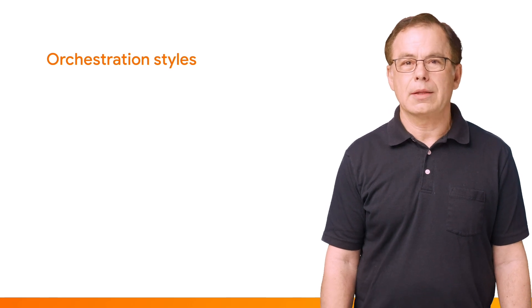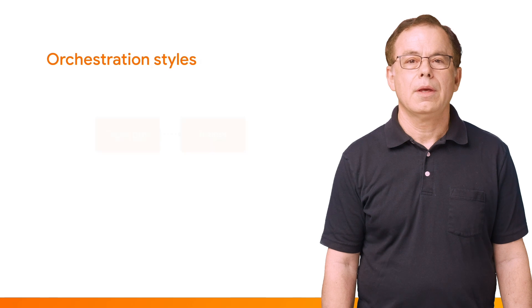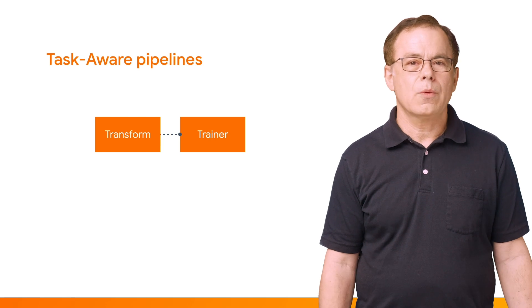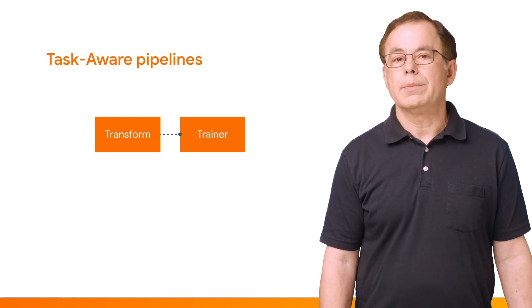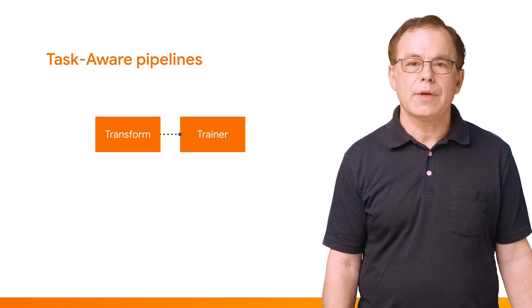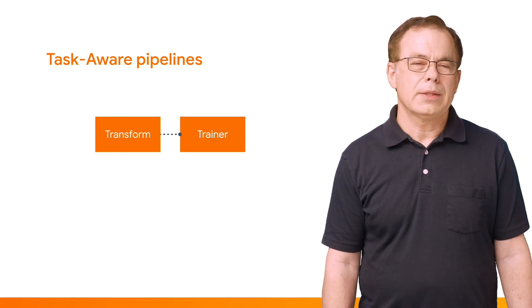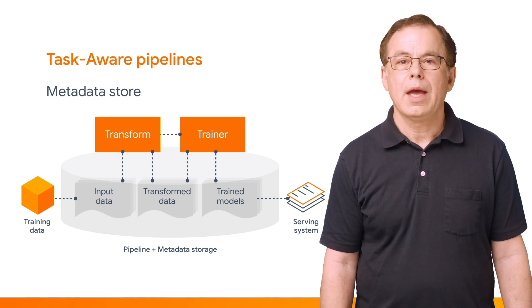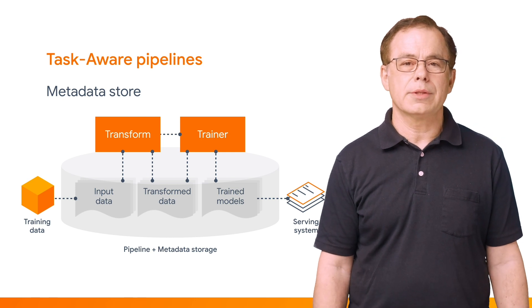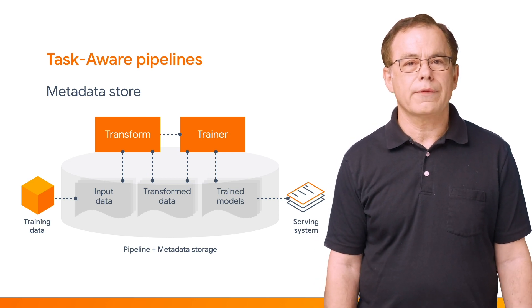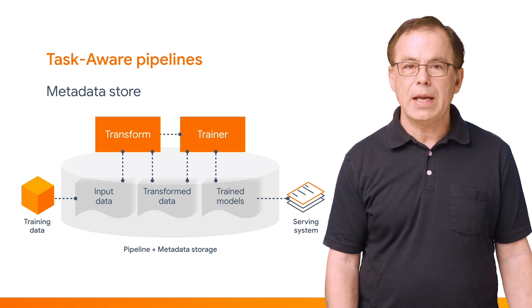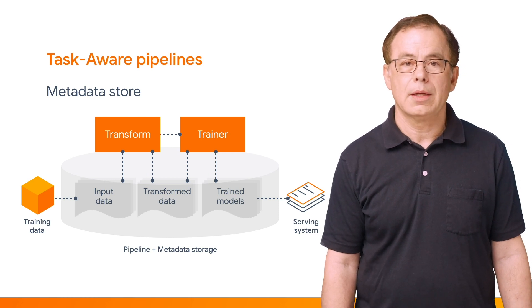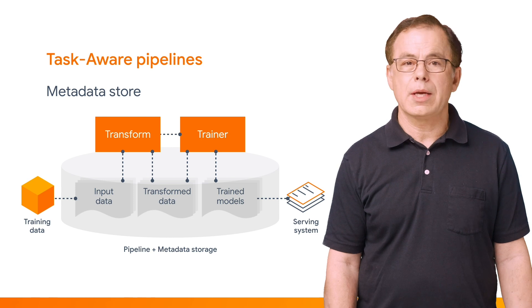But what is orchestration exactly, and how does it help us? If all you need to do is kick off the next stage of the pipeline, task-aware architectures are enough — you can simply start the next component as soon as the previous one finishes. But a task- and data-aware architecture is much more powerful, and really almost a requirement for any production system, because it stores all the artifacts of every component over many executions. Having that metadata creates a much more powerful pipeline.